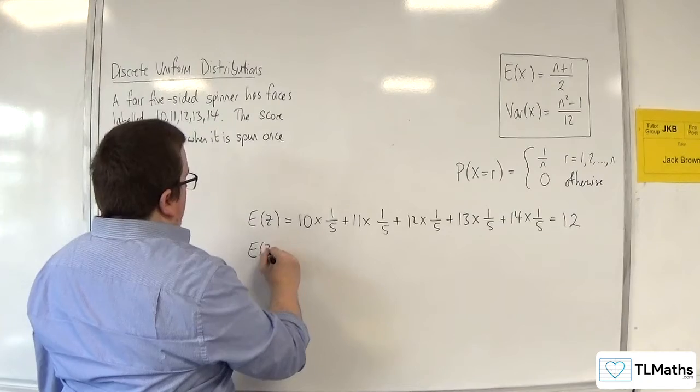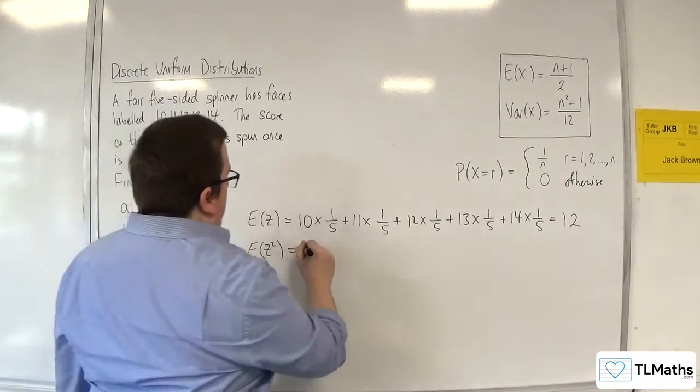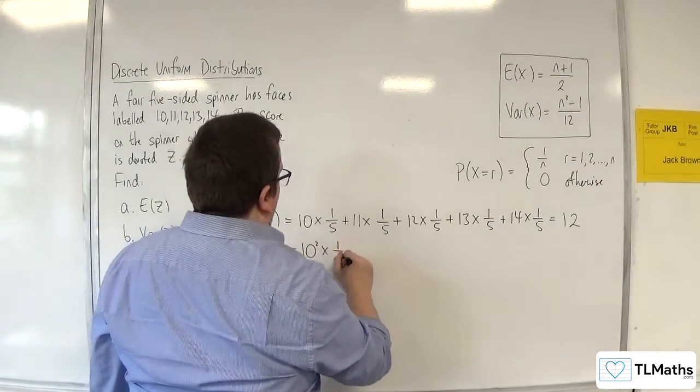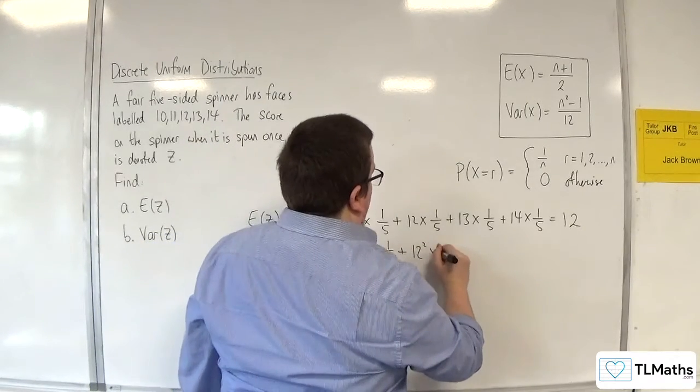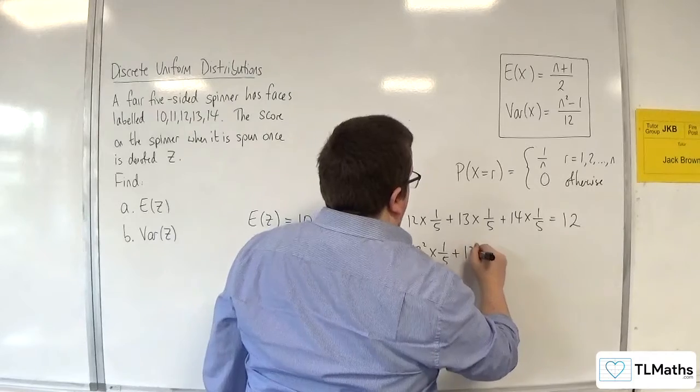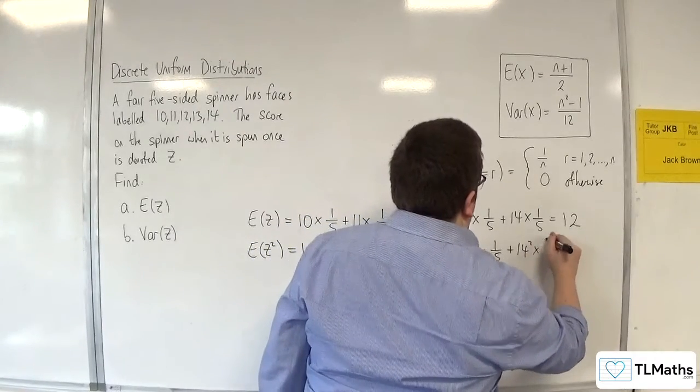So I need E of z squared. That would be 10 squared times 1 over 5 plus 11 squared times 1 over 5 plus 12 squared times 1 over 5 plus 13 squared times 1 over 5 plus 14 squared times 1 over 5.